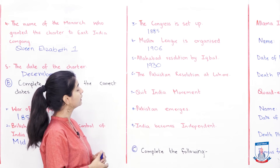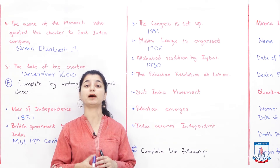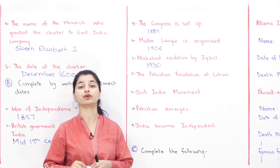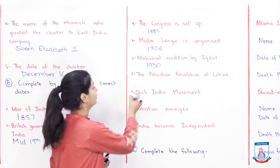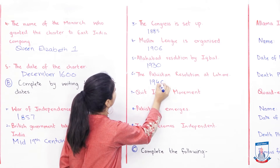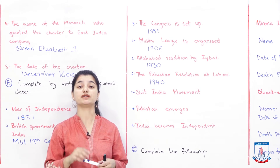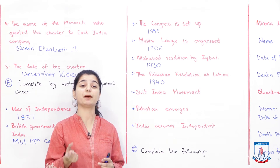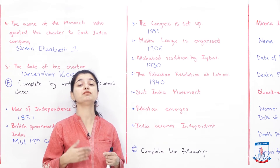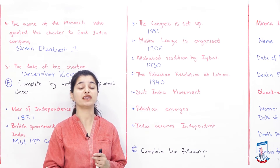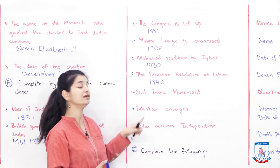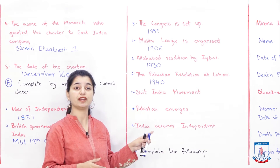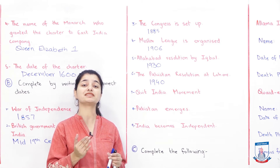The Pakistan Resolution at Lahore — when did it happen? It was on 23rd March 1940. That was the point where Pakistan's name came into the picture and they directly said they need a country called Pakistan, which will be a Muslim state where minorities are also considered. That was in 1940 at Lahore, and that is known as Pakistan Resolution Day. You can mention specifically 23rd March.